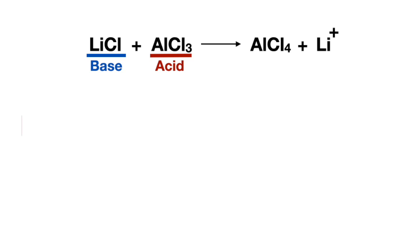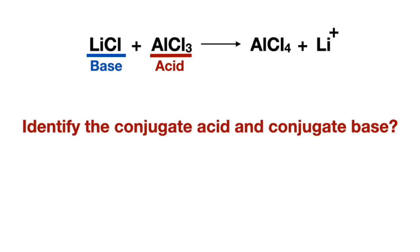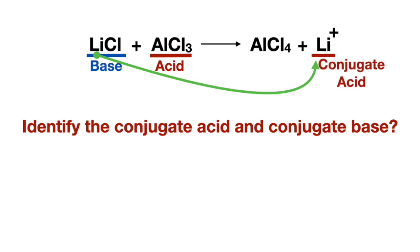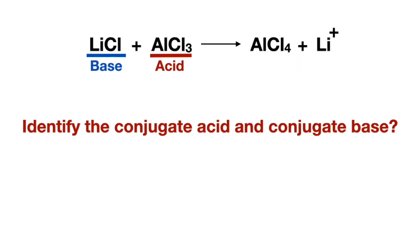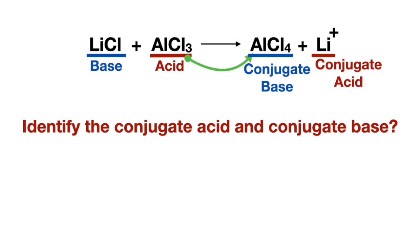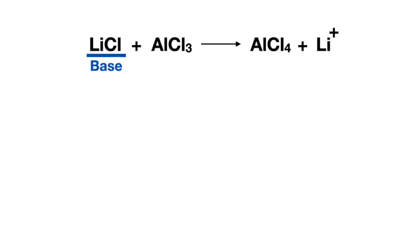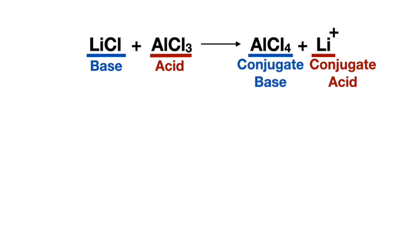Now let's identify the conjugate acid and conjugate base. You can follow the base compound to the product side and call that the conjugate acid, making the other product the conjugate base. Or you can follow the acid compound to the product side, making that the conjugate base and the other product the conjugate acid. So we have the base and its conjugate acid, and the acid and its conjugate base.